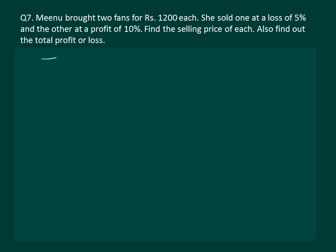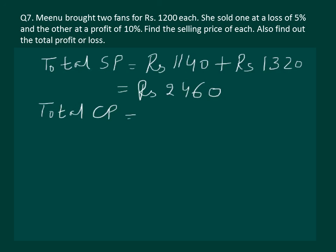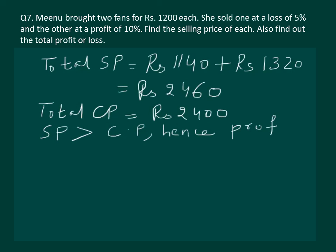Now it's time to calculate the total sale price of the two fans. Sale price of the first fan was rupees 1140, and sale price of the second fan was rupees 1320, which amounts to rupees 2460. Our total cost price was rupees 2400. Since sale price is greater than cost price, Minoo made a profit.